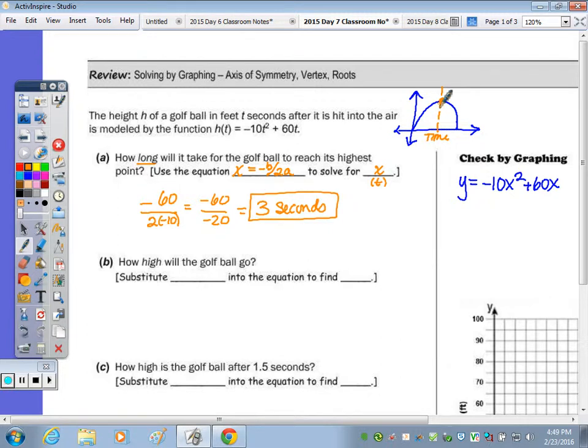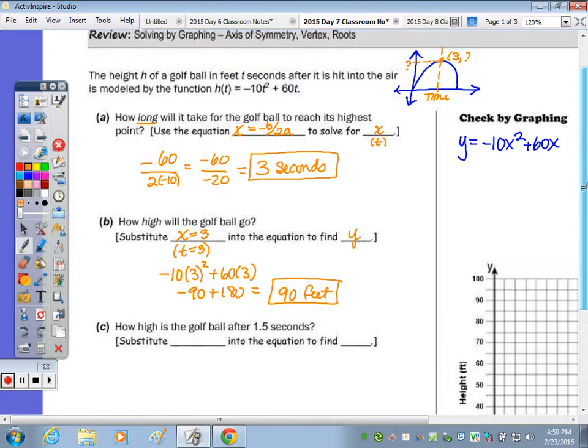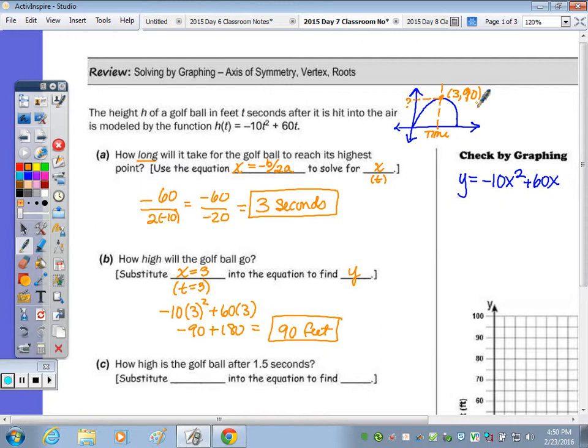What is that maximum height? So at that point of 3, what's the y value? So this is what I'm looking for now. How high would the ball go? So we're going to substitute x = 3 or t = 3 into the equation to find y. So we've got -10 times 3² + 60 times 3. So this is -90 + 180 = 90 feet. So going back up here in our picture, this question mark is now 90.